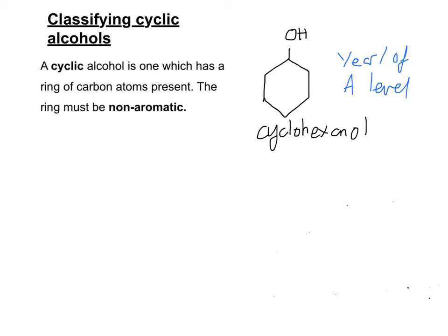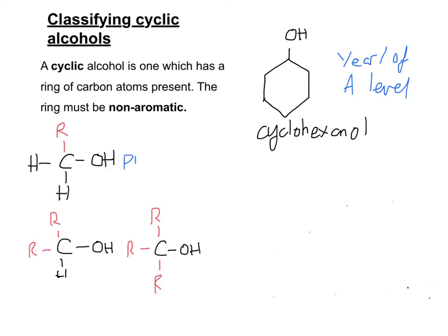So if we remember that primary, secondary, and tertiary have specific structures that they follow. A primary alcohol will have one R group attached to the carbon that the OH group is attached to. A secondary alcohol will have two R groups attached to the carbon the OH group is attached to. And a tertiary alcohol will have three R groups attached to the carbon that the OH is attached to.